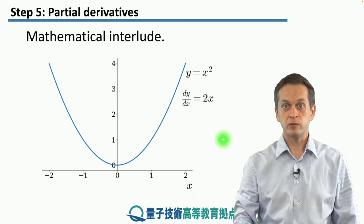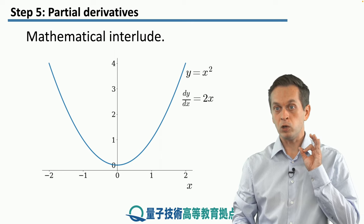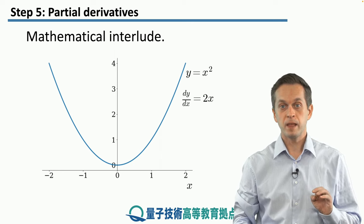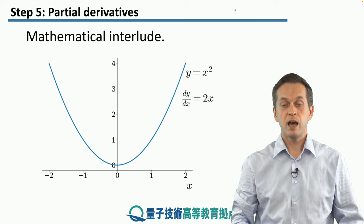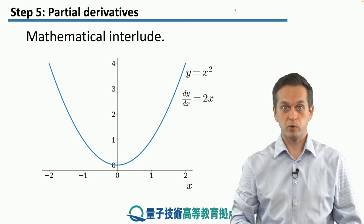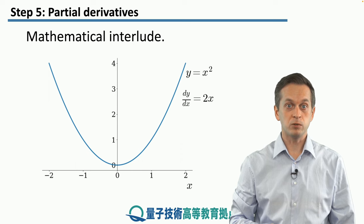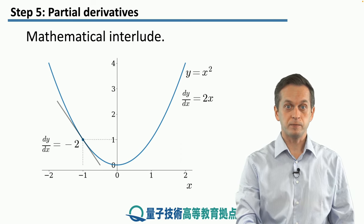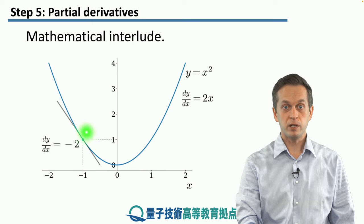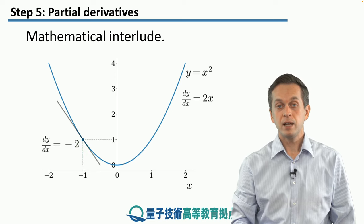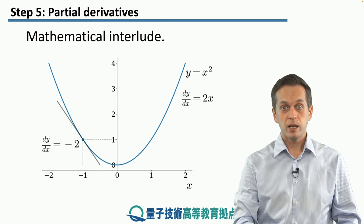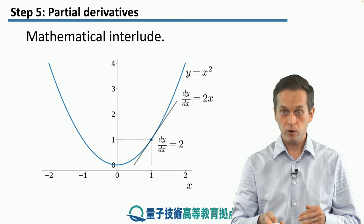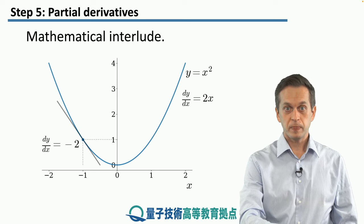So what does this rate of change mean? It means that if we look at a specific point along the x-axis and substitute it into this expression for dy/dx, it tells us how fast the function is changing at that point. For example, we can pick x equals minus one. Substituting into dy/dx, we get negative two. That means the function is decreasing at that point — the negative sign indicates decreasing, and two indicates how fast.